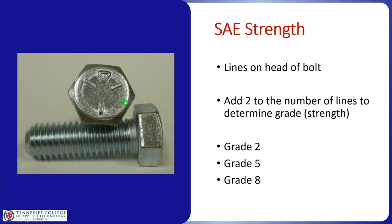A bolt with markings like lines or slashes is a standard bolt. A good way to determine the grade is to add 2 to the number of lines on the bolt head. So a bolt with 3 marks: 3 plus 2 equals grade 5. The most common grades you'll see in standard bolts are 2, 5, and 8.